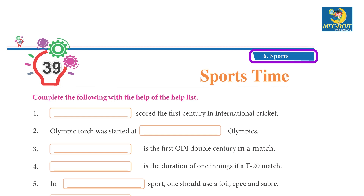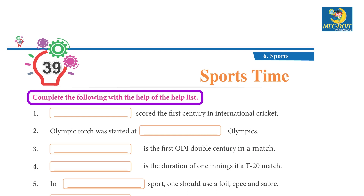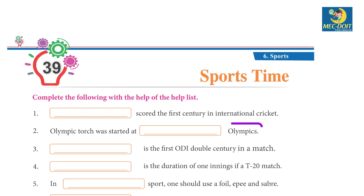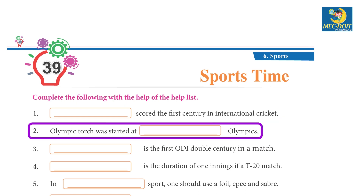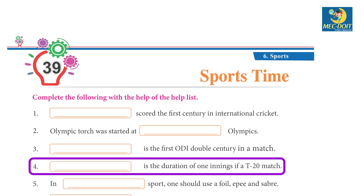Unit 6, Sports, Chapter 39 — Sports Time. Complete the following with the help of the given clues. 1. Charles Bannerman scored the first century in international cricket. 2. The Olympic torch was started at the Berlin Olympics. 3. Sachin Tendulkar is the first to score a double century in a match.